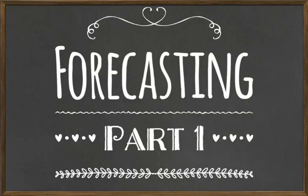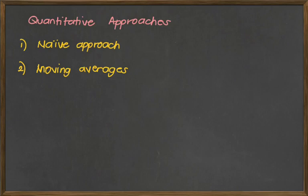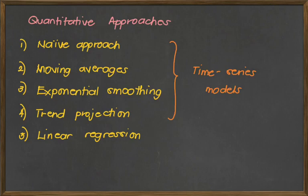Hi guys! For today's discussion, we are talking about forecasting. We have the quantitative approaches to forecasting. The first one is the naive approach, second is the moving average, third is exponential smoothing, fourth is trend projection, and the last one is linear regression. For the first four methods, these are called the time series models, and the last one is called the associative model.